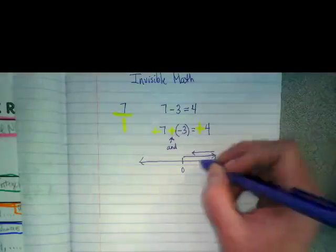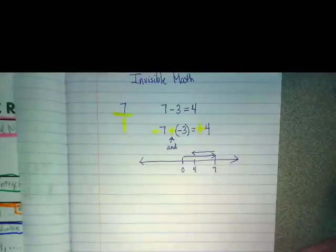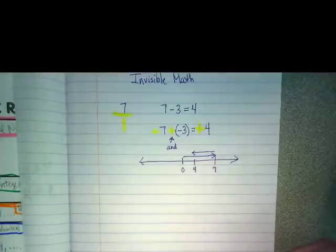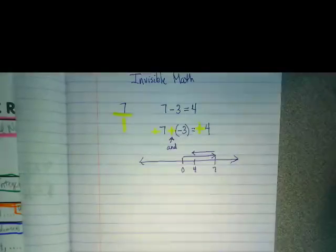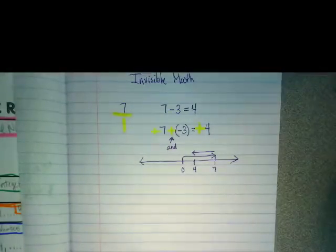And we would end up at four, right? When we reverse on the number line, we're going the opposite direction. And that's what we're doing when we're subtracting.